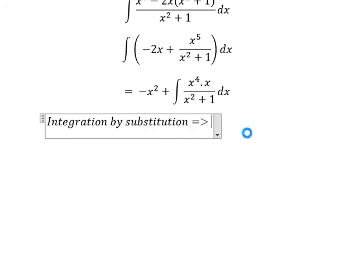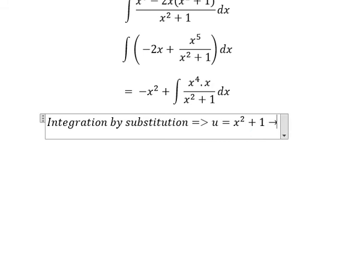So we have u equal to x to power of 2 plus 1. So x to power of 2 equals to u minus 1.